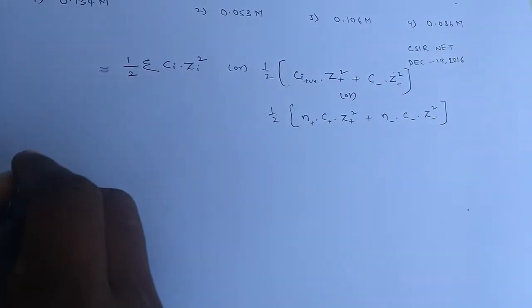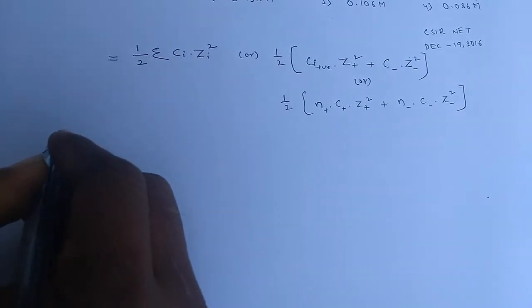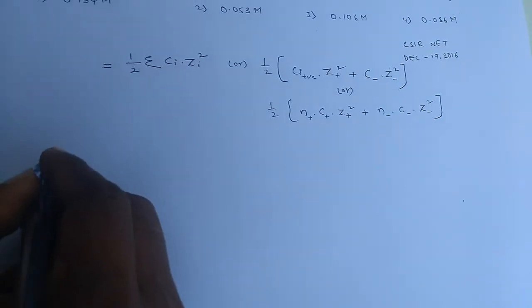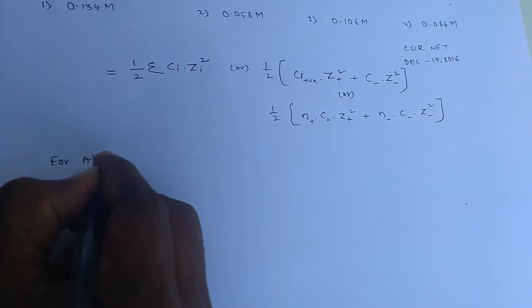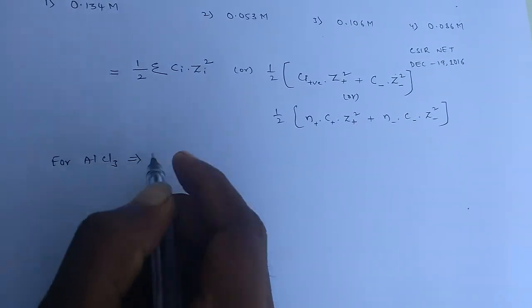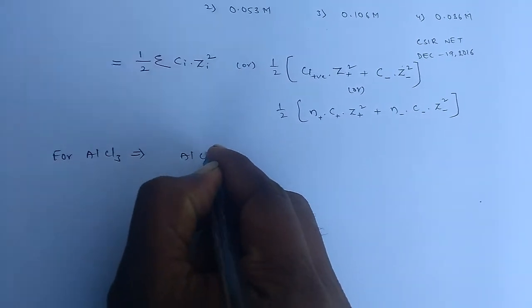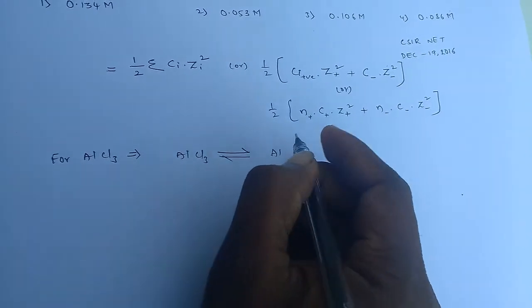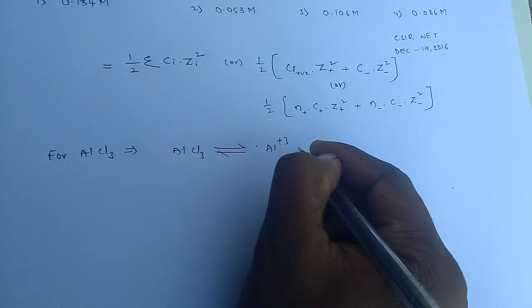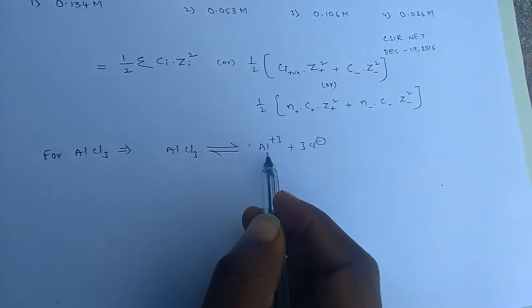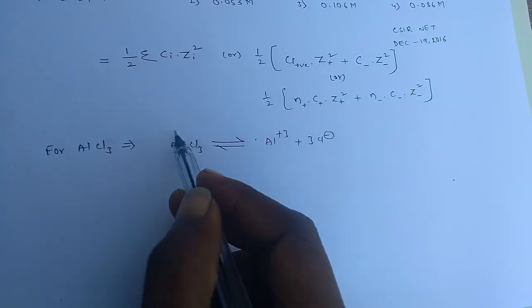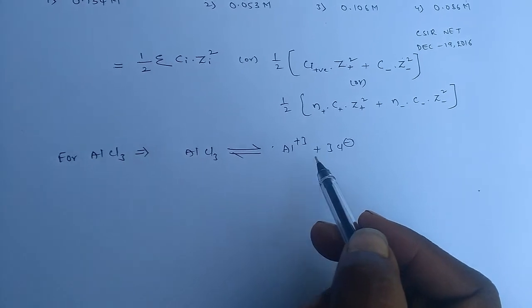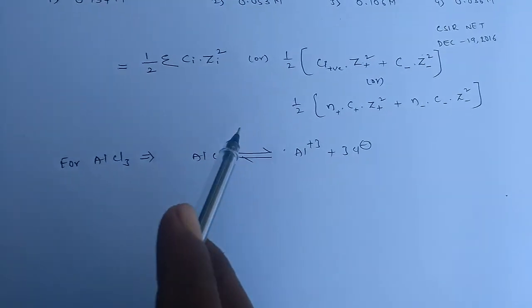Now we are going to calculate the ionic strength of the first solution, aluminum trichloride, AlCl3. AlCl3 in its ionic form in solution is in equilibrium with Al³⁺ and 3Cl⁻. These are the ions aluminum trichloride shows in aqueous solution. If you calculate ionic strength, by applying it in the formula: